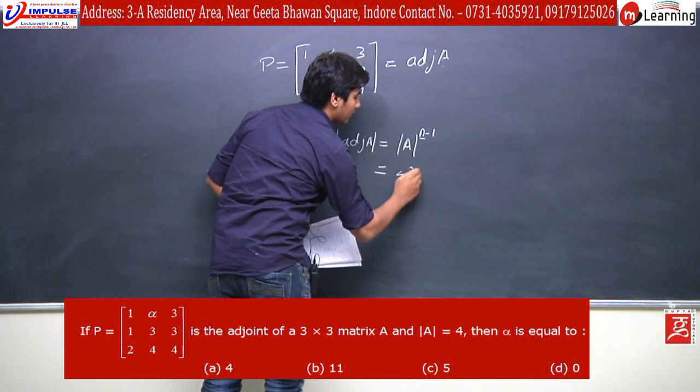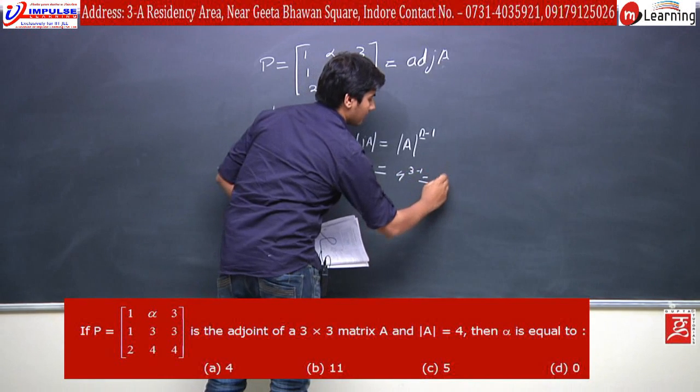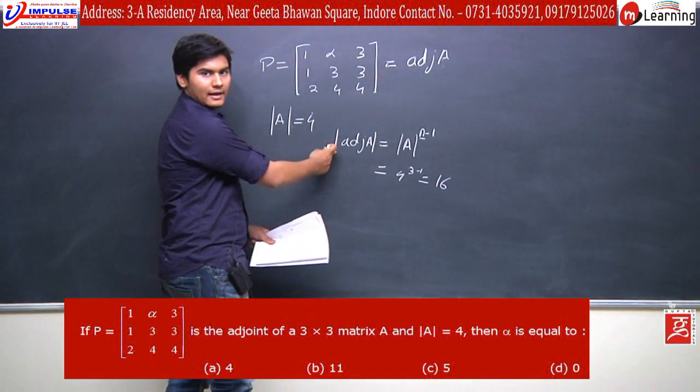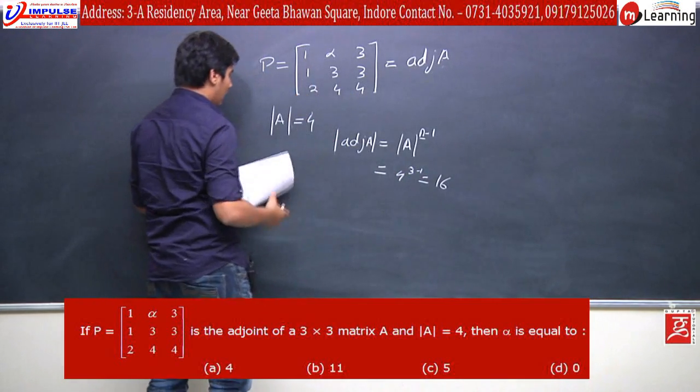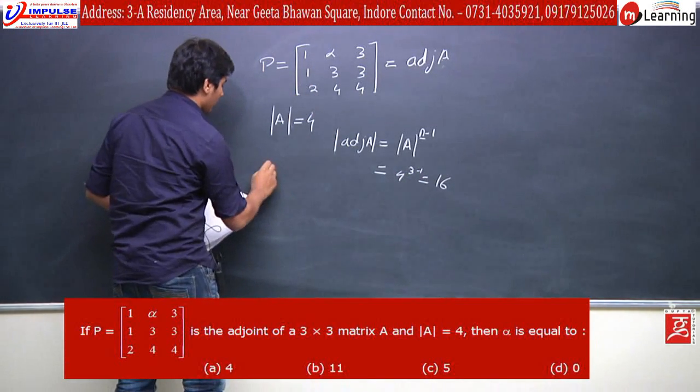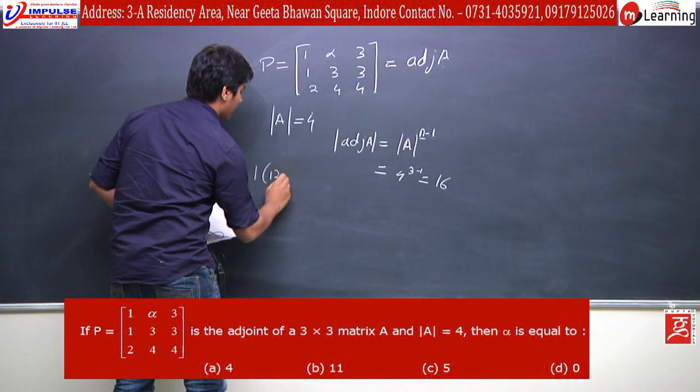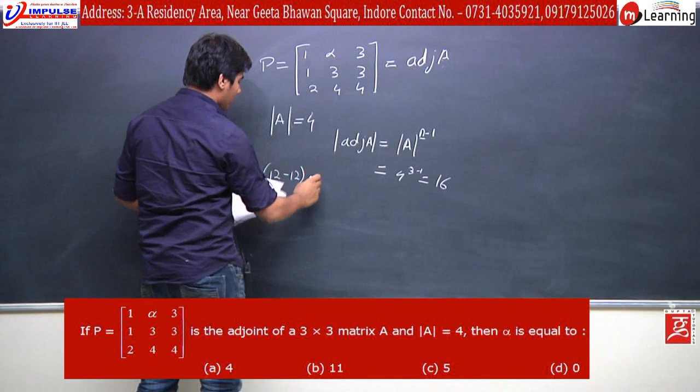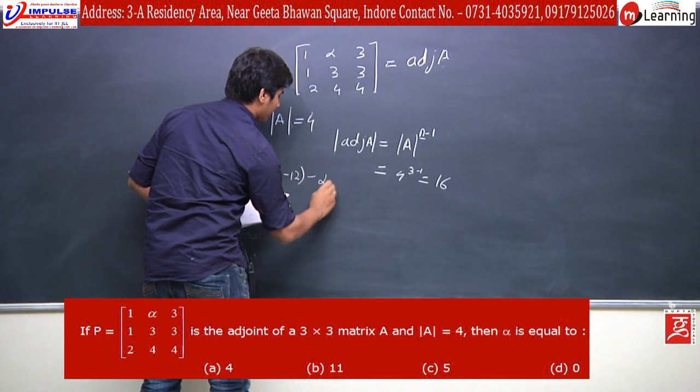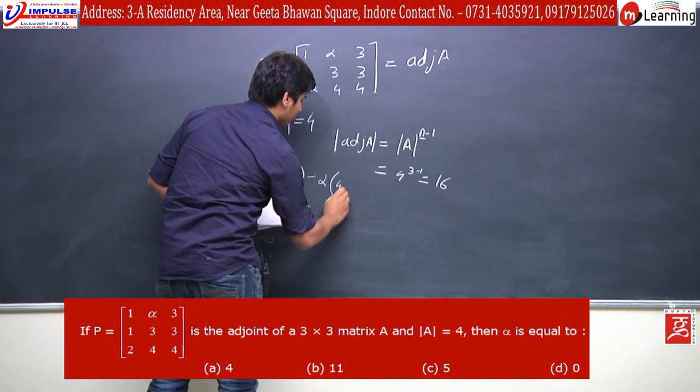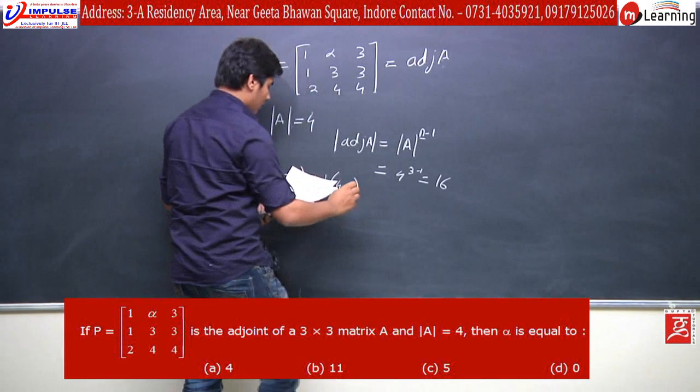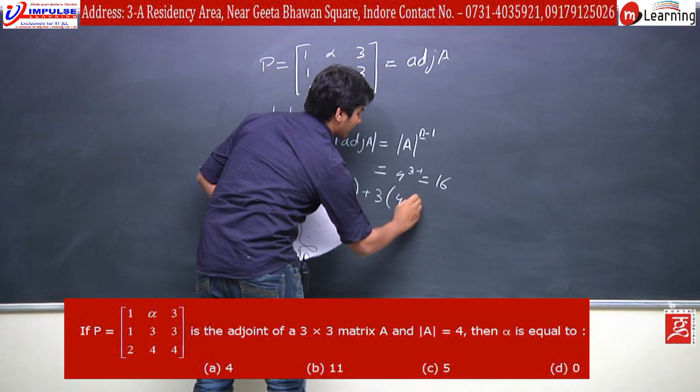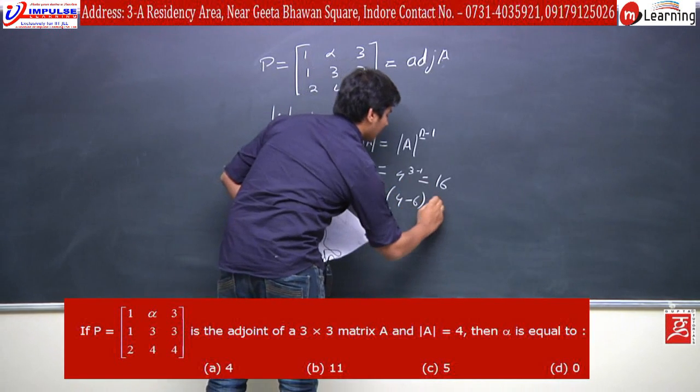So 4 to the power 3 minus 1 is equal to 16. Now, determinant of adjoint A, this value comes from first row along expansion, plus 3 into 4 minus 6 equals 16.